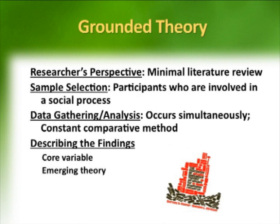Data collection and analysis occur simultaneously in grounded theory — compare that to quantitative, in which data are collected and then analyzed. While collecting data and writing field notes, a grounded theory researcher keeps memos about hunches concerning the emerging patterns, then follows up on those hunches. Using open coding, the researcher examines the data carefully, line by line, and breaks it down into discrete parts, comparing it for similarities and differences. This is called the constant comparative method. The process continues when codes are clustered to form categories and a core variable, and finally there is the construction of a theory, with a diagram often created.